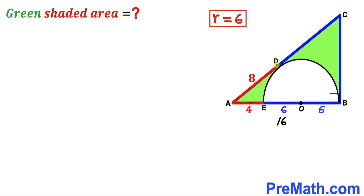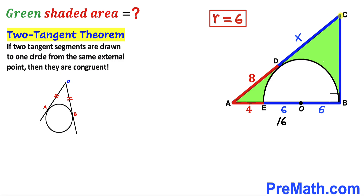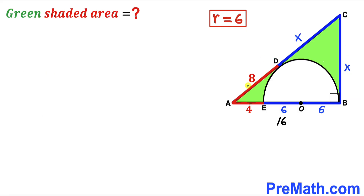Now let's assume segment CD has length X units. Recalling the two tangents theorem: if two tangent segments are drawn to one circle from the same external point, they are congruent. Applying this theorem, segment BC must equal segment CD. So if CD = X, then BC = X as well. The full diagonal AC is therefore X + 8, making the hypotenuse X + 8.